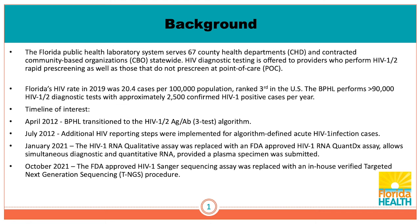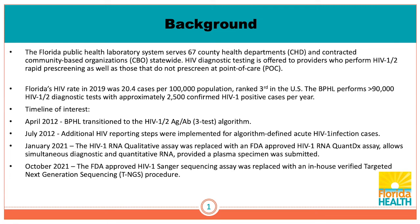We actually transitioned to the HIV 1-2 antigen antibody 3-test algorithm in April 2012, even before the guidelines came out, because we had the opportunity with contracts to both switch our primary screening tests as well as to move away from Western Blot all at this same time period. Later that year, from July through December, the ability to report algorithm-defined acute cases differentiating from established cases became fairly common.